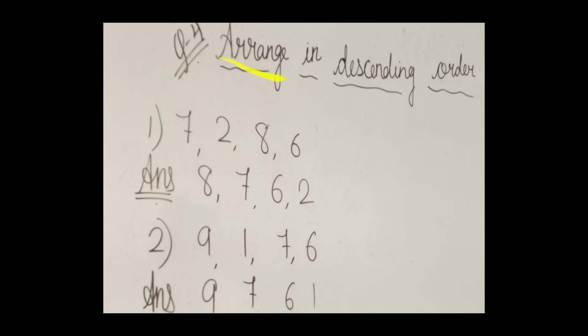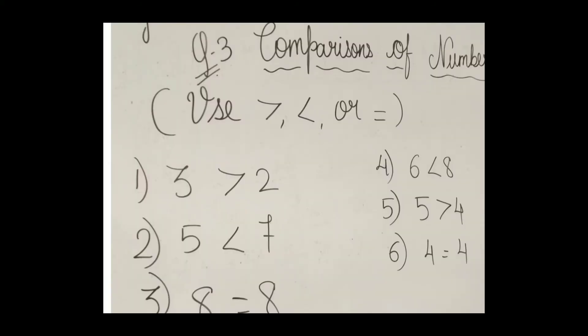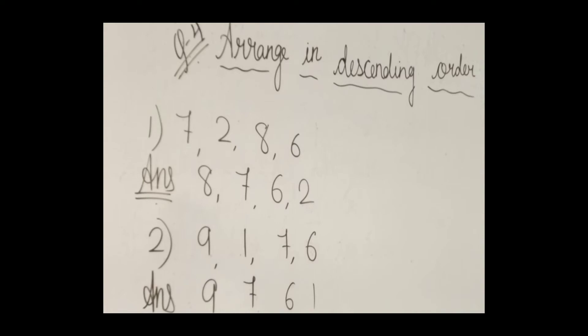Now, arrange in descending order. You have to arrange this in descending. Descending means from greatest to smallest. So, 7, 2, 8 and 6. First of all, we will write the number 8, then 7, 6, 2.